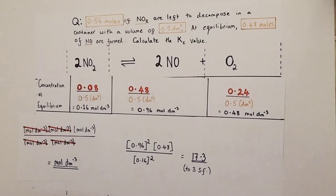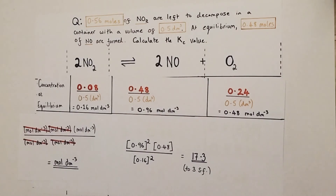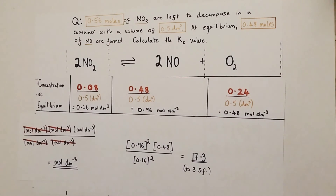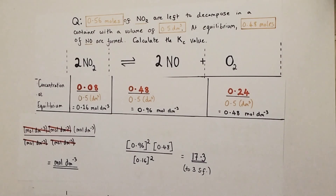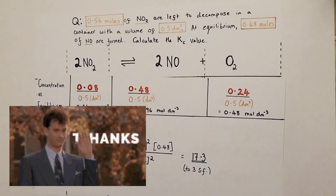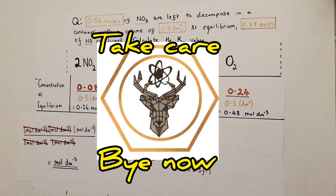And that is our two worked examples. I really hope this has helped you better understand how to tackle what can be challenging equilibrium Kc calculations. I look forward to talking to you in the next Alchemist Chemistry video where we expand on another chemistry idea. As always, thanks for listening. Take care. Bye now.